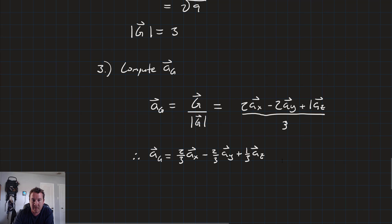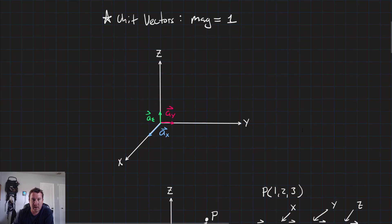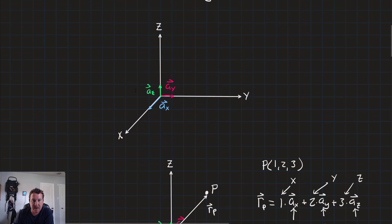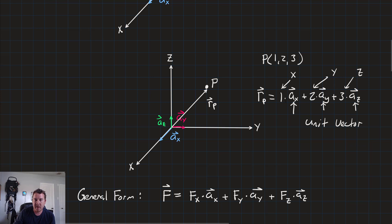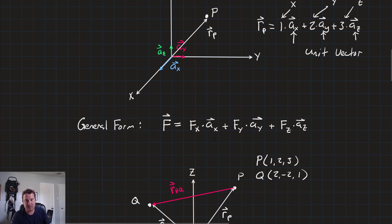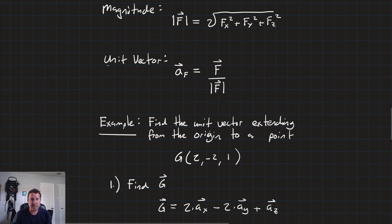That's how we compute our unit vector, and that is the end of this lesson. We talked about how vectors are composed of smaller component vectors that fit along the axes, and those vectors can be further simplified to unit vectors of magnitude 1. Each vector is a collection of coefficients multiplied by the unit vectors, giving the general form: f equals f_x times a_x plus f_y times a_y plus f_z times a_z. We also saw how to calculate a vector connecting two points, find the magnitude as the square root of the sum of squared components, and find a unit vector by dividing by the magnitude.